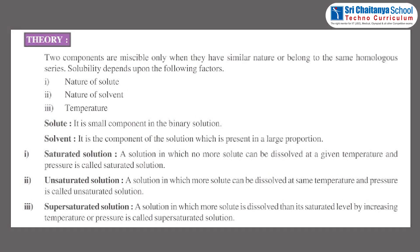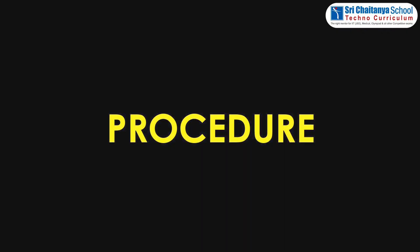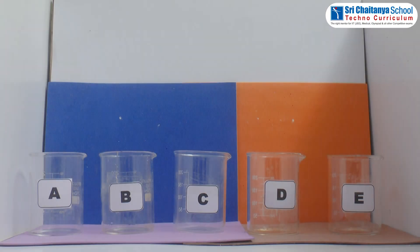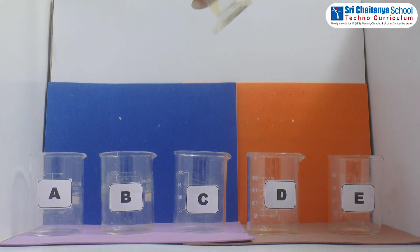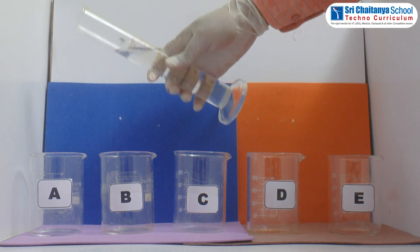Now it is time to see the procedure. Take five beakers and label them as A, B, C, D, and E. Fill each one of them up to half level with water.